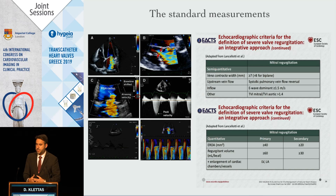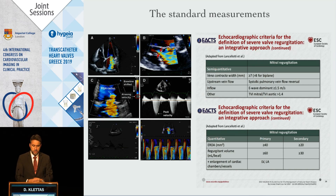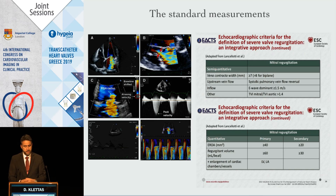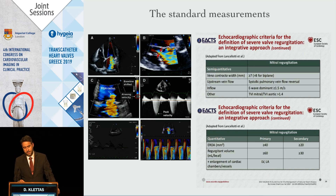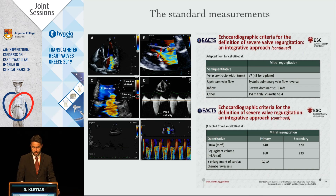The standard measurements suggested by the European Society of Cardiology are the vena contracta, the PISA radius, and the derived ERO, the density of the Doppler of the mitral leak, the systolic wave of the pulmonary veins, and a color M-mode which gives additional information about the duration of the mitral valve regurgitation.